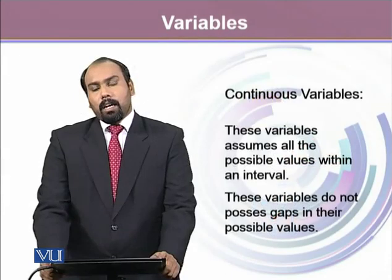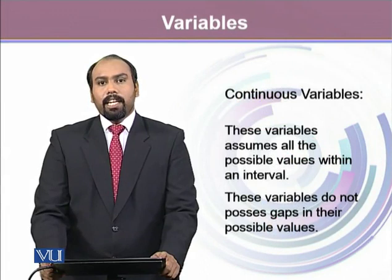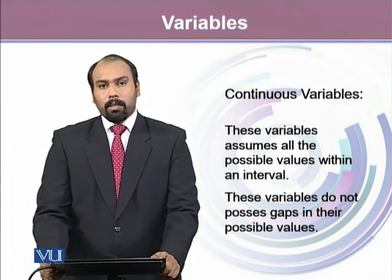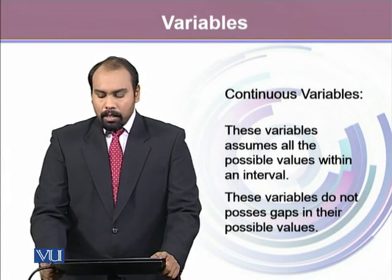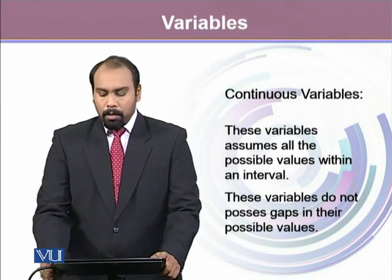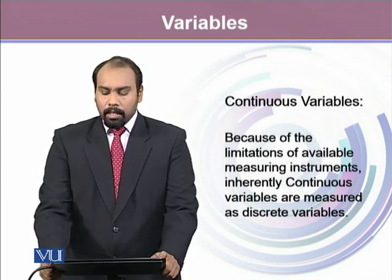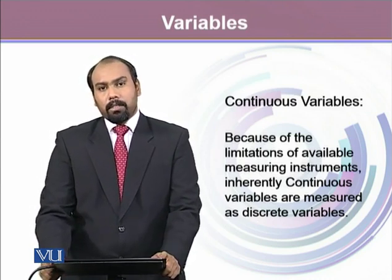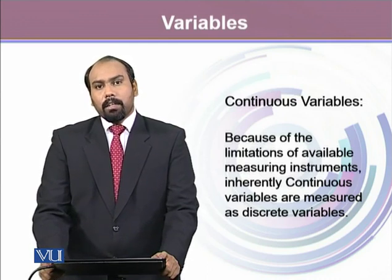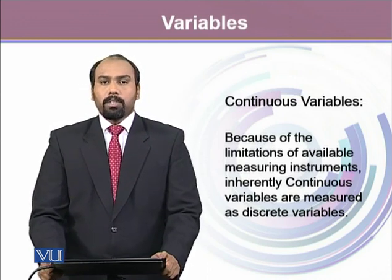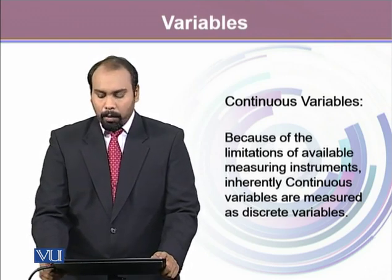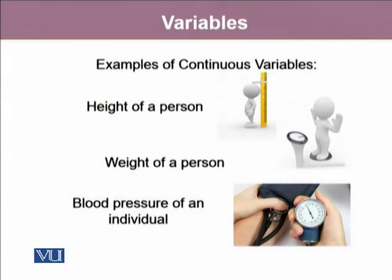Continuous variables are variables that take on each and every value within an interval — they do not have gaps in their possible values. However, continuous variables do have certain limitations of measurement, which is why we still observe them as somewhat discrete points. Examples of continuous variables include height, weight, and blood pressure of an individual.